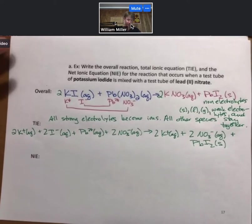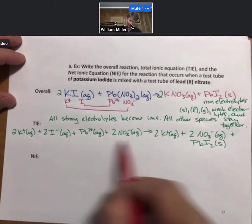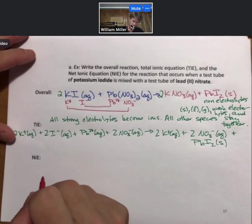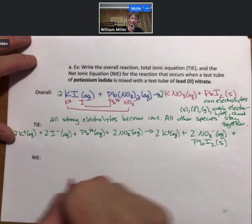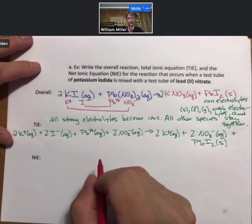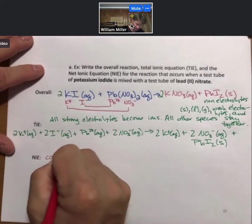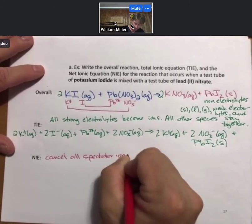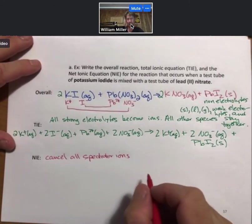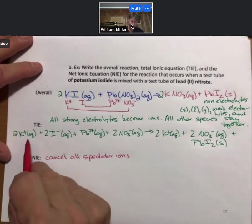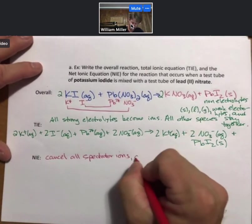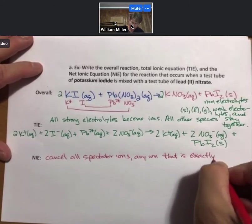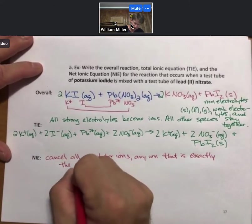So that's a working definition of a TIE, an example. Now the NIE, the net ionic equation. So a couple things we want to say about that. First, in the net ionic equation, you cancel all spectator ions. And a spectator ion is any ion that is exactly the same on both sides.